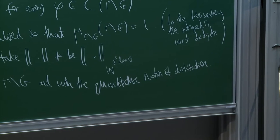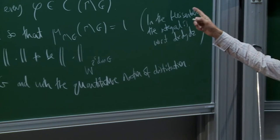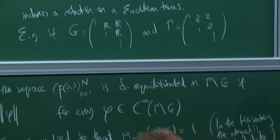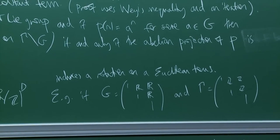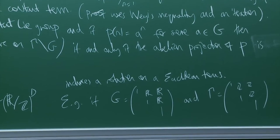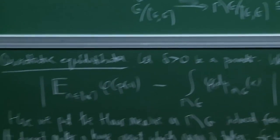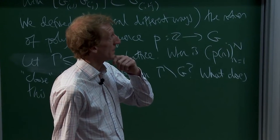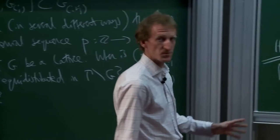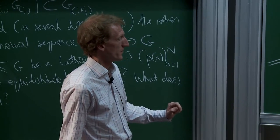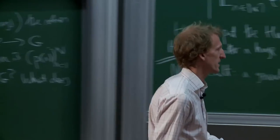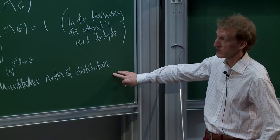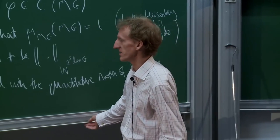Leon Green's theorem is valid for any simply connected nilpotent group and for any linear sequence on that group. If you instead want a polynomial sequence, it turns out a polynomial sequence can be lifted to a linear sequence on a much bigger group, so you get the polynomial equidistribution result for free from the linear one. But that argument fails in this quantitative setting.